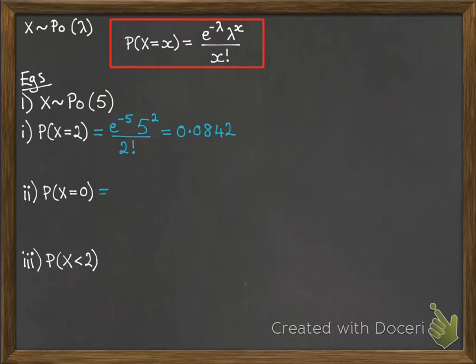The probability to x equals 0 will be e to the minus 5. Then lambda to the power of 0 is always going to be 1, so we don't need to worry about that. And 0 factorial is always 1 as well, so we don't need to worry about that. So that's true for any lambda. If you're working out probability to x equals 0, it's just always e to the minus lambda.